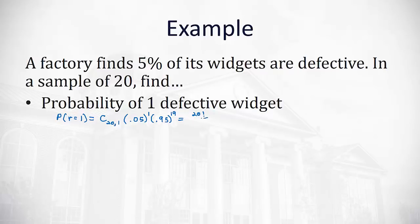A combination is calculated with factorials: 20 factorial over 19 factorial times 1 factorial, times 0.05 raised to the first power, times 0.95 raised to the 19th power. We can do that on our calculator. The combination reduces down to just 20, so we have 20 times 0.05 times 0.95 to the 19th power. We end up with a probability of 0.3774 — that's the probability we get exactly one out of 20 defective widgets.